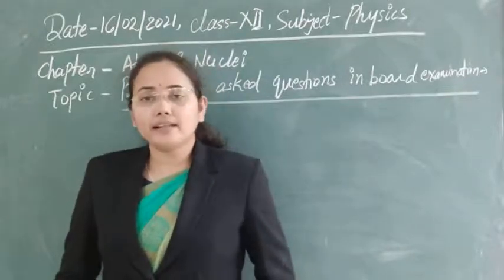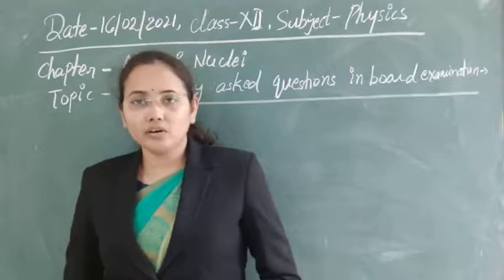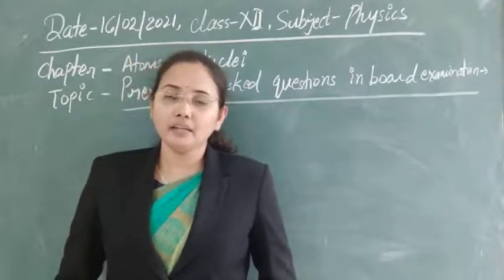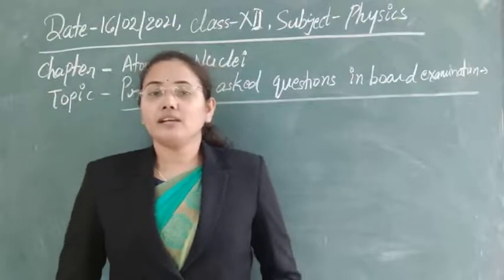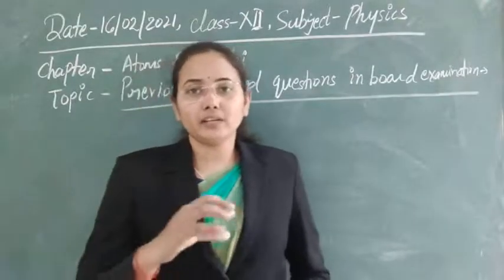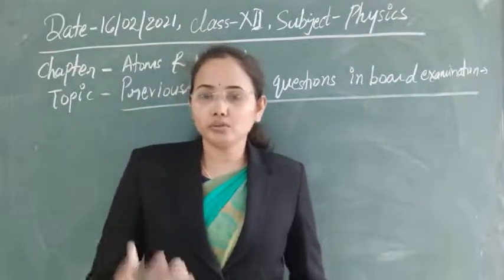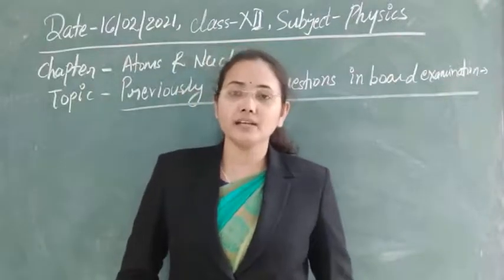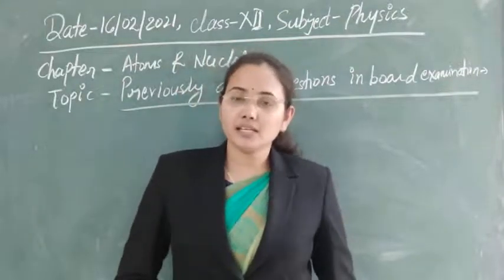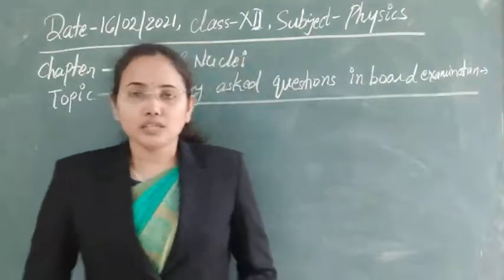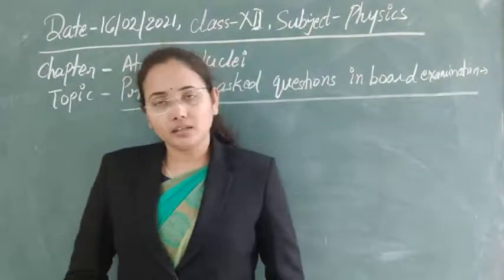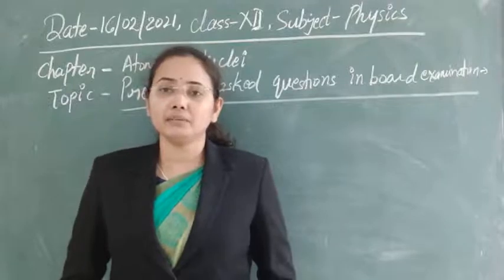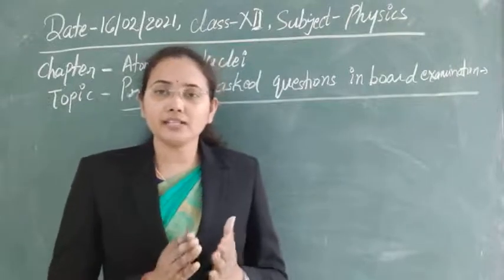When a vacancy is created inside the atom in any core orbit, the atom becomes unstable. To regain stability, higher-orbit electrons make transitions to the lower orbit. According to Bohr's third postulate, this transition produces electromagnetic radiation — in this case, X-rays. This is how we produce the characteristic spectrum.